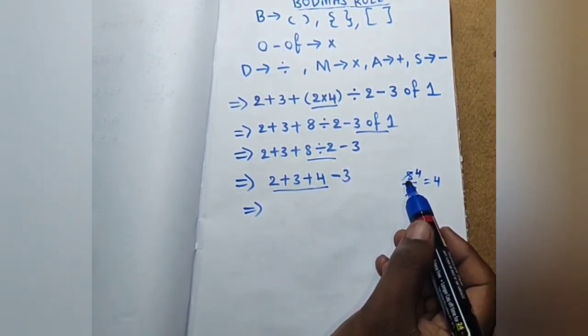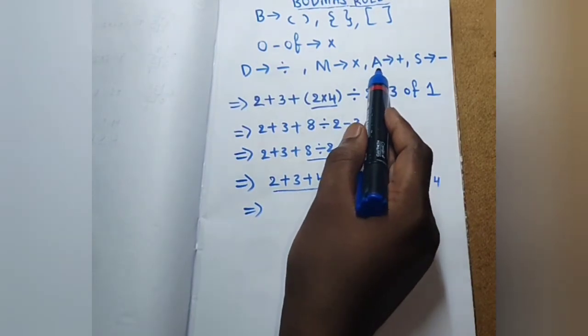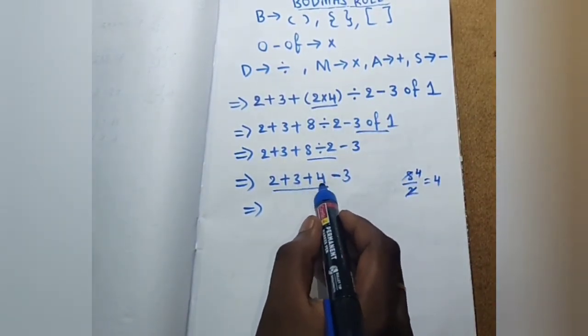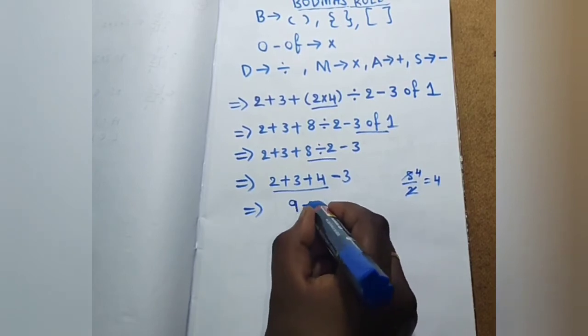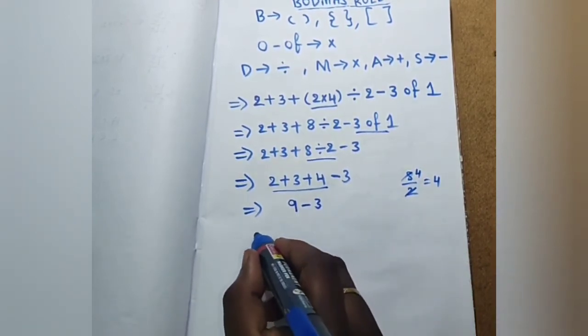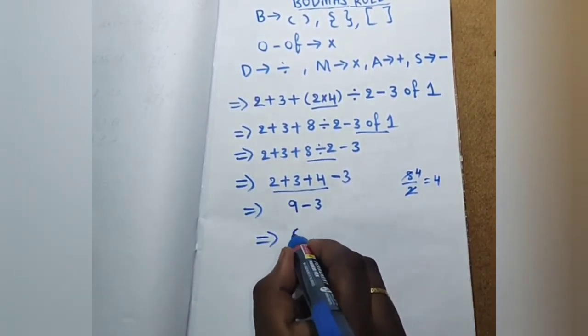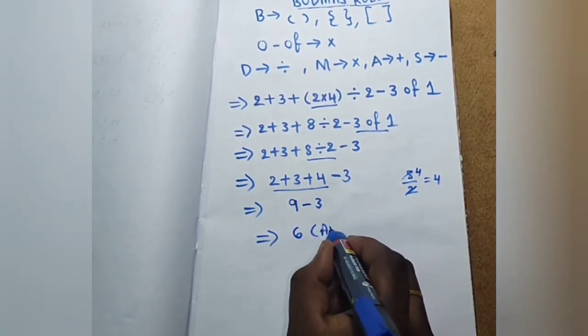In BODMAS rule, addition comes first. 2 plus 3 is 5, 5 plus 4 is 9, 9 minus 3 is nothing but 6 is the answer.